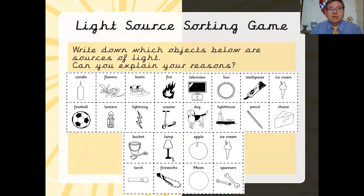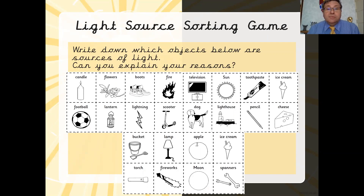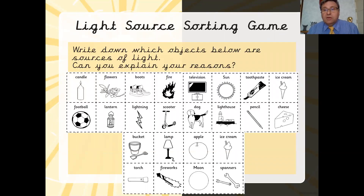Moving on. Looking at these objects on the screen, some of them are sources of light. Can you identify which ones are actually sources of light - which ones give light off or give light out, rather than just reflect light? Take a minute or two to read them and then write down a list of all the ones you think actually provide light, give out light, are sources of light, and then maybe explain your reasons for your choice - why you think certain ones give out light and why you think certain ones don't.